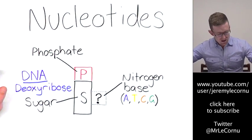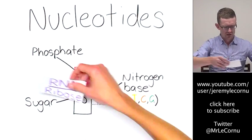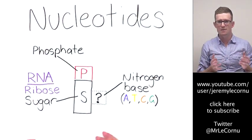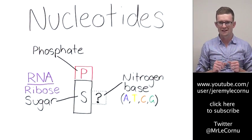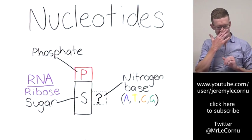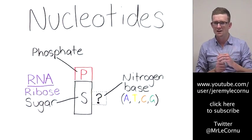But in RNA, the sugar is ribose sugar. And that's why it has the name ribonucleic acid. So that's one of our differences with our nucleotides in RNA compared to DNA.